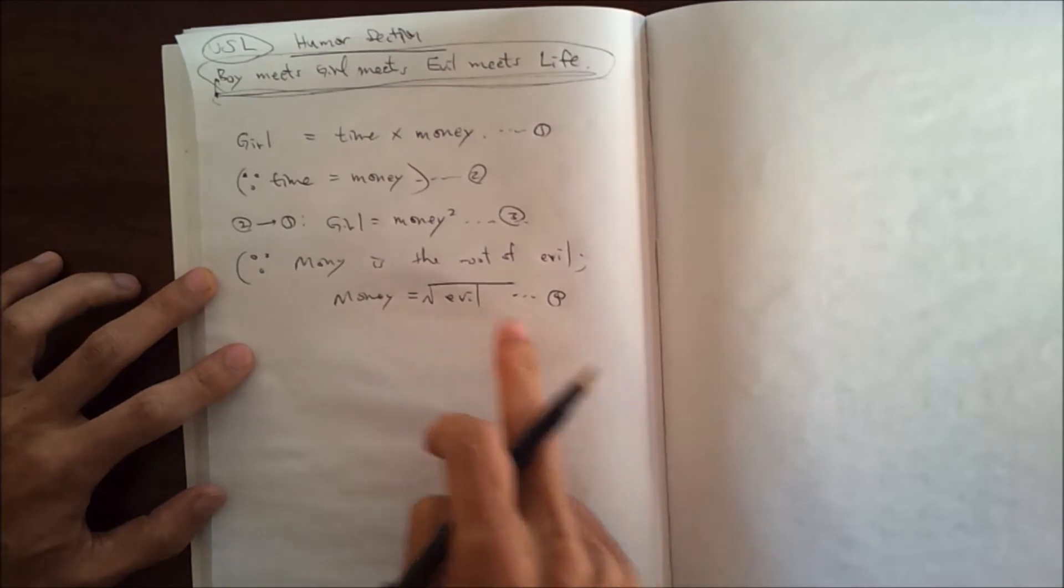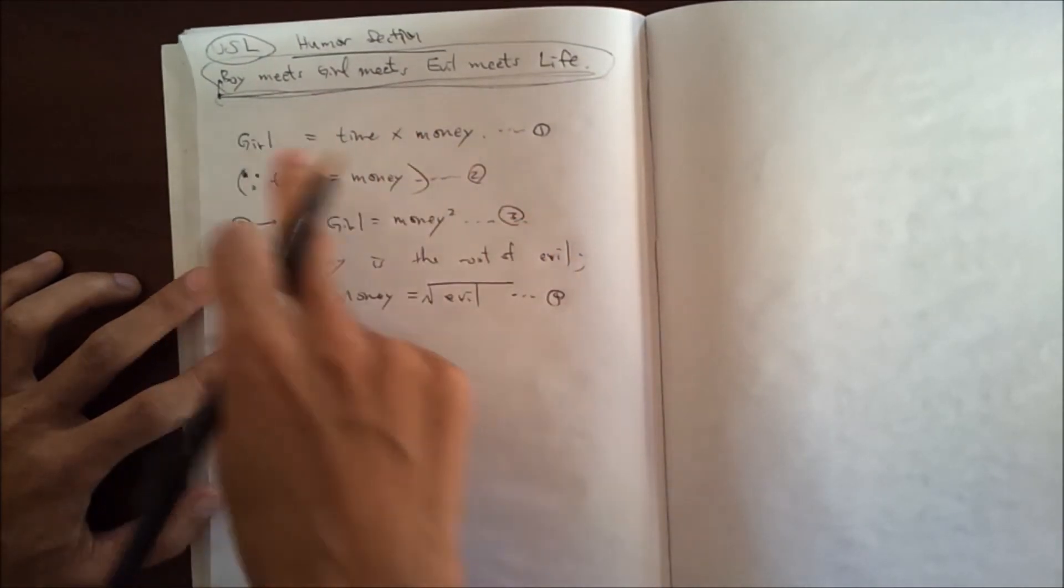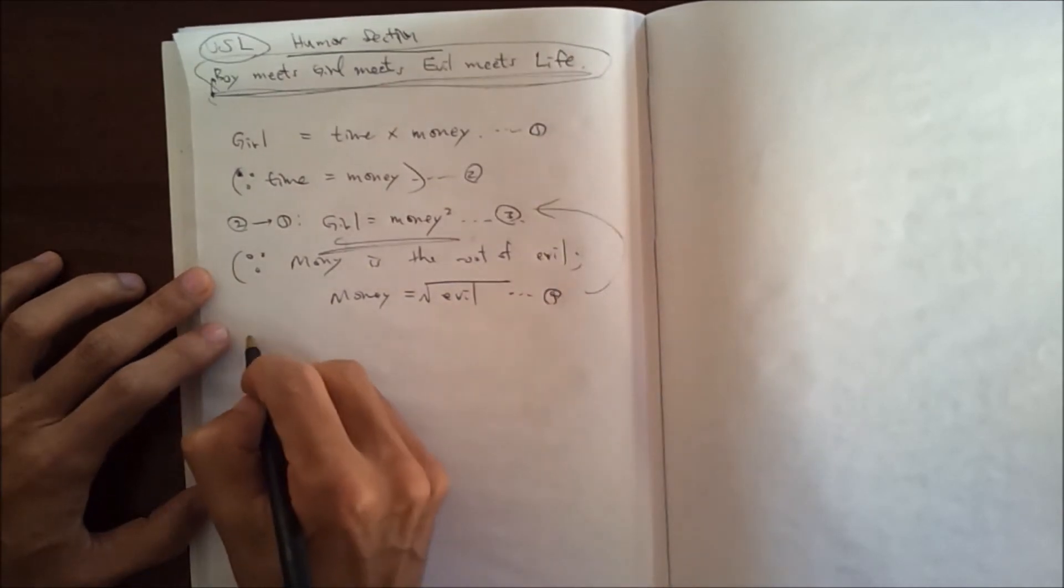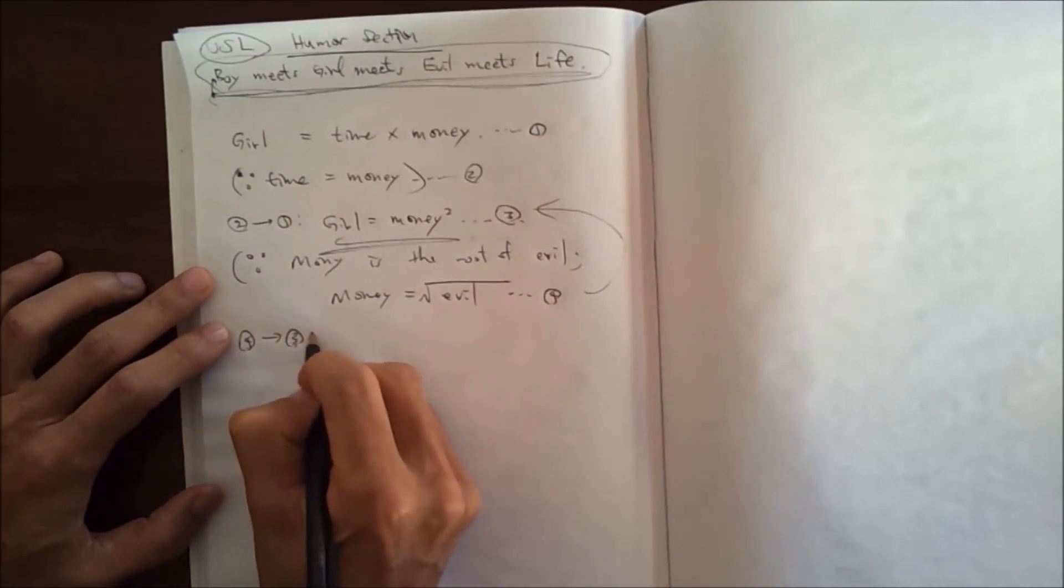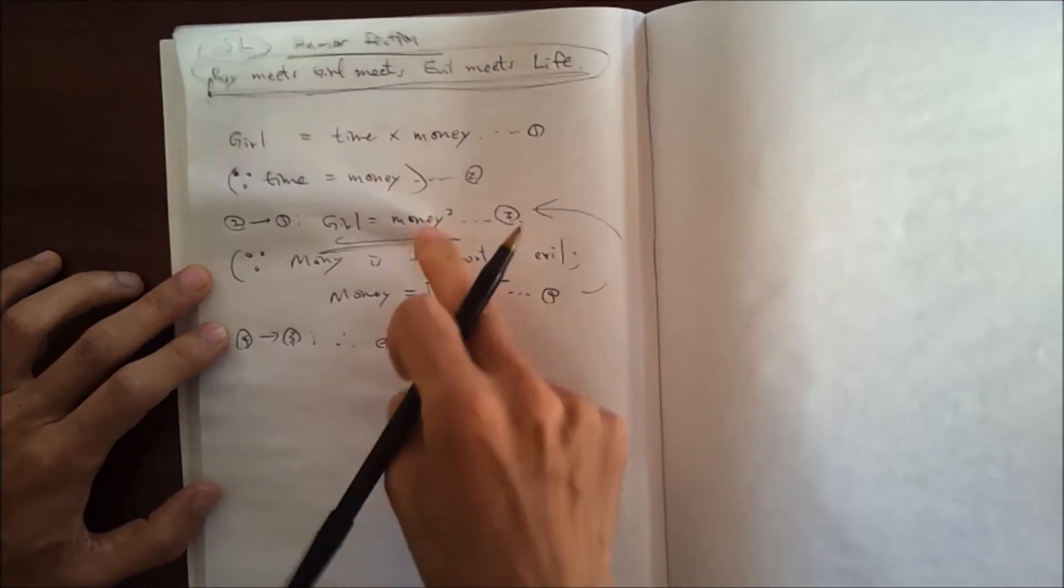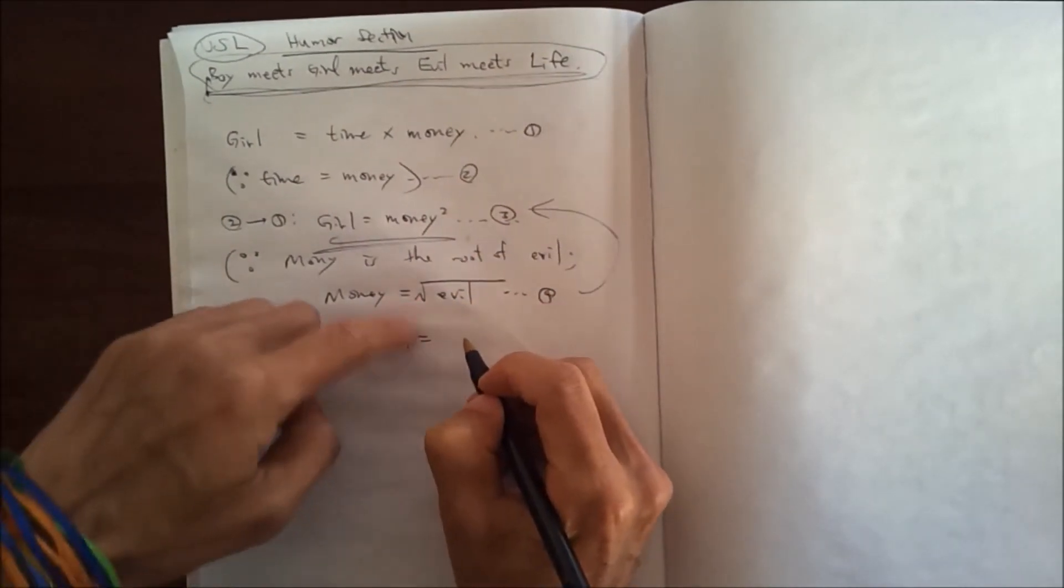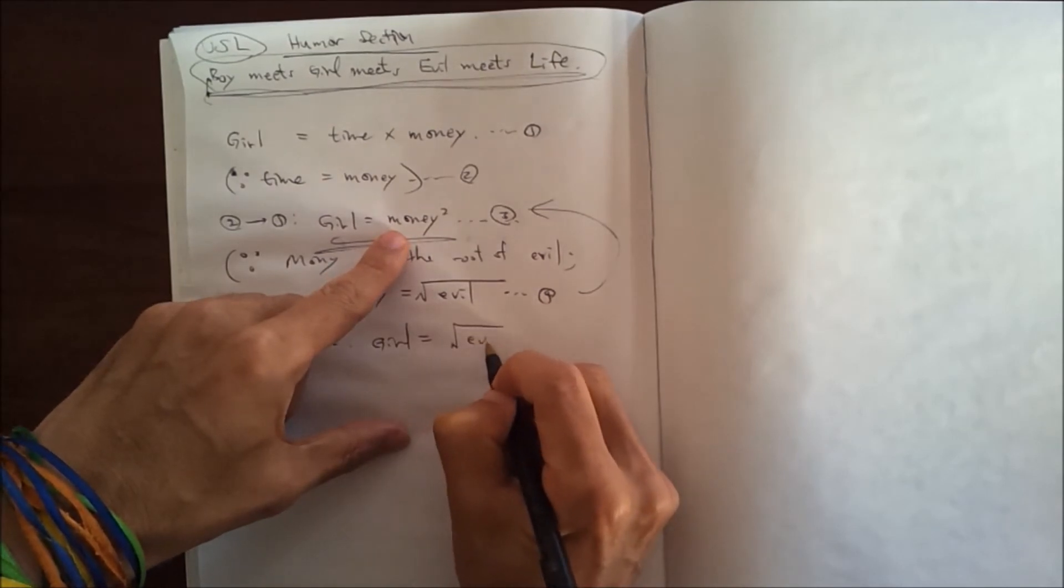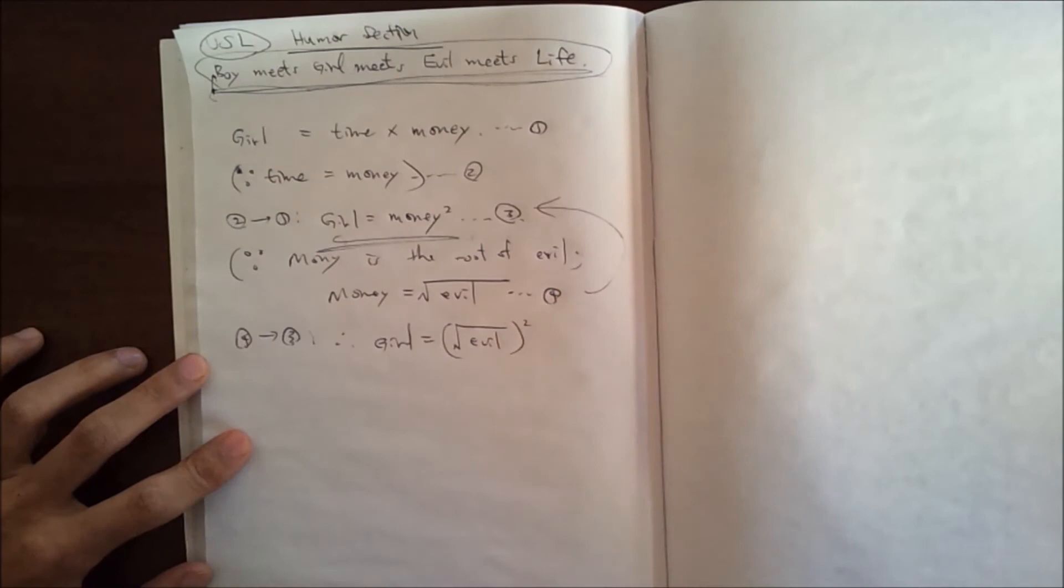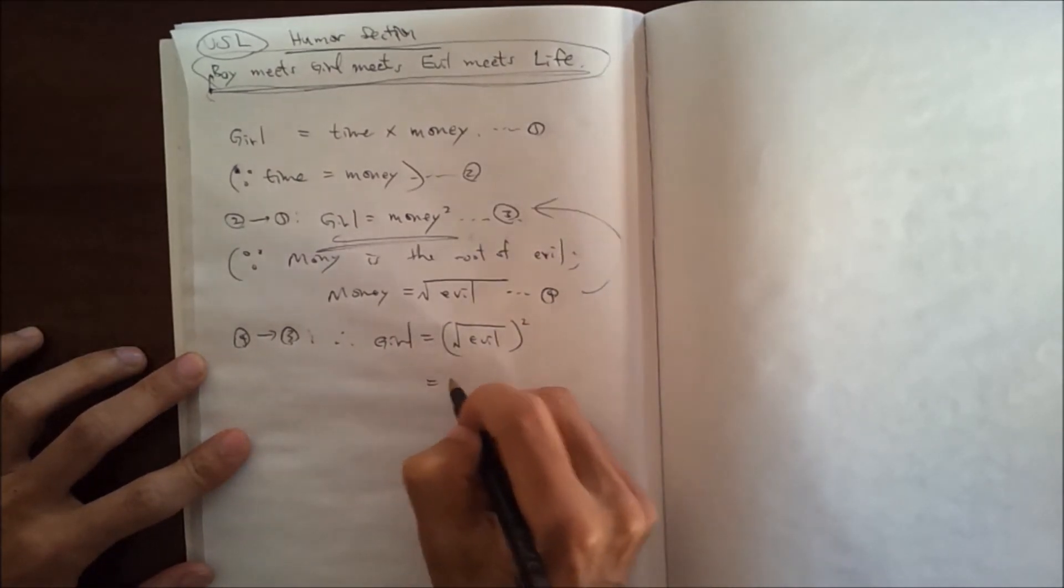So girl, time is the money and the money is the root of all evil. So the intermediate step from here, we got here. So from here, if you plug equation four into there, then therefore girl equals money squared is the square root of evil squared. And something square root of evil squared become evil.